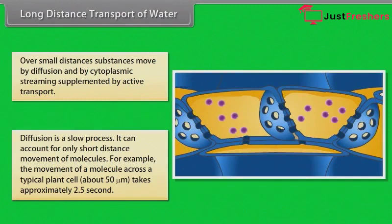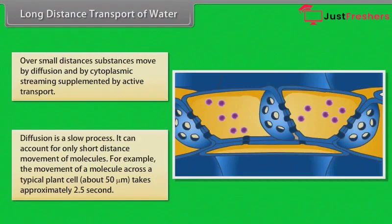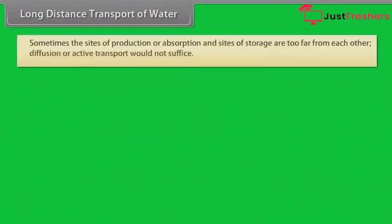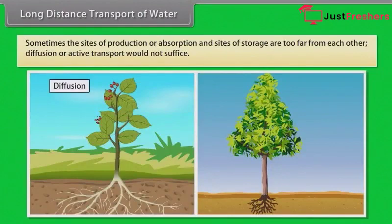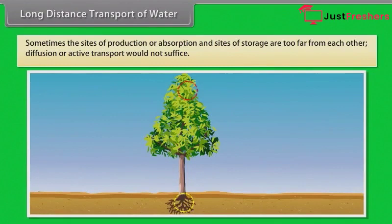Some trees are up to 50 feet tall. So think how many years it would take for the movement of molecules over a distance of 25 to 30 feet within a plant by diffusion alone. Sometimes the sites of production or absorption and sites of storage are too far from each other. Diffusion or active transport would not suffice.